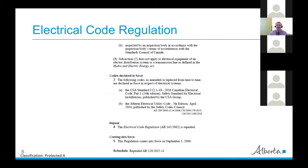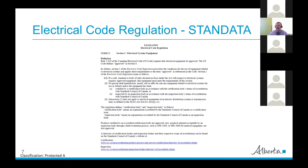Continuing on, item three doesn't make the same requirements for utilities. In section three, under codes declared in force, it shows the two codes that are in force right now in Alberta: the Canadian Electrical Code Part 1 of 2018, and of course the Alberta Electrical Utility Code 2016. We also have stand data on that, which basically talks about what I just finished talking about and how electrical equipment has to be approved by a CB or IB.